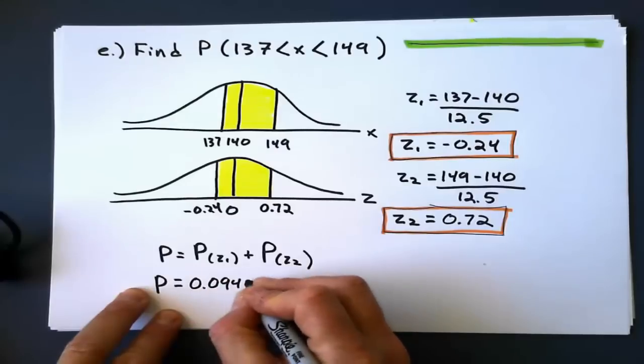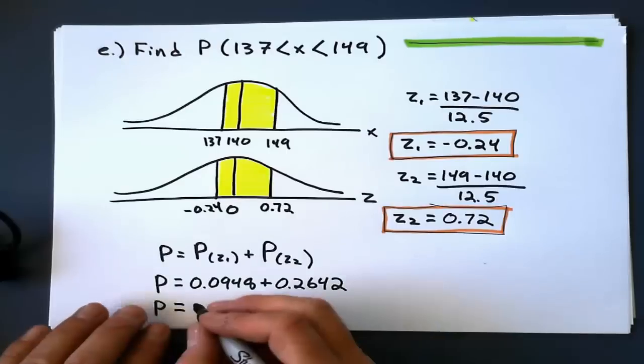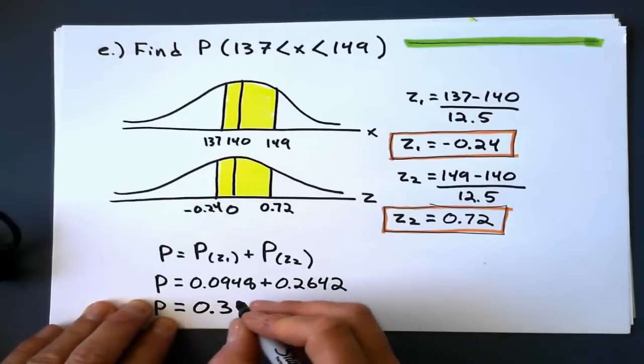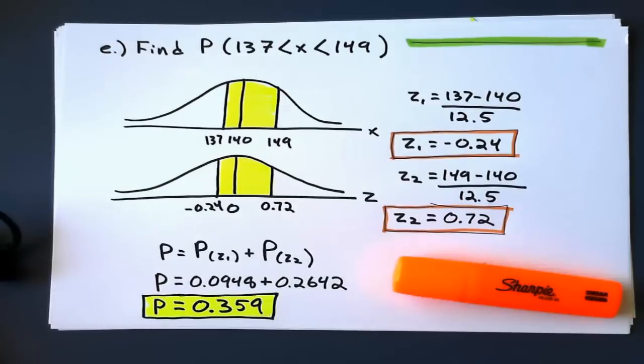Look up positive 0.24 on there, which is 0.0948, plus look up 0.72, 0.2642. Add the two together, and I get 0.359. Done. Thank you.